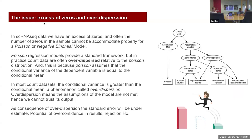The issue is that when we have excess zeros and over-dispersion, we need to look for different models that can support this. In single-cell RNA-Seq data, we have an excess of zeros and often the number of zeros cannot be properly accommodated by the Poisson or negative binomial models usually used in most packages. Poisson regression models provide a standard framework, but in practice, count data are often over-dispersed relative to the Poisson distribution.